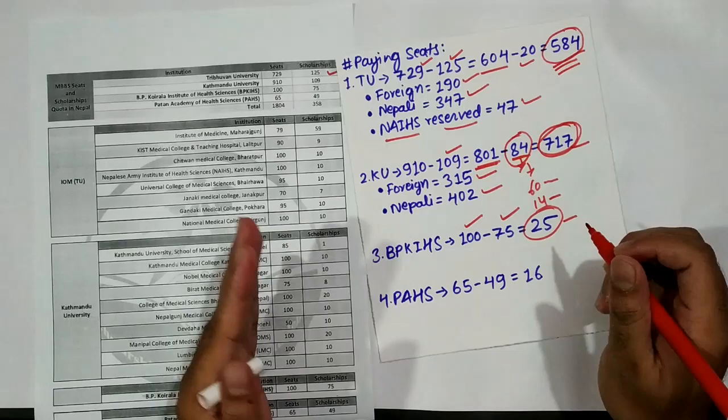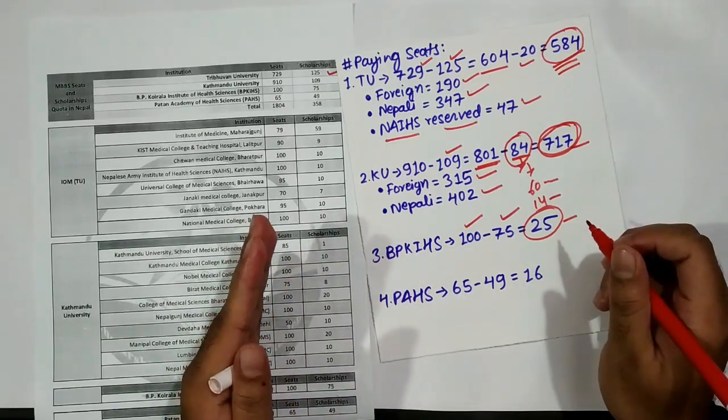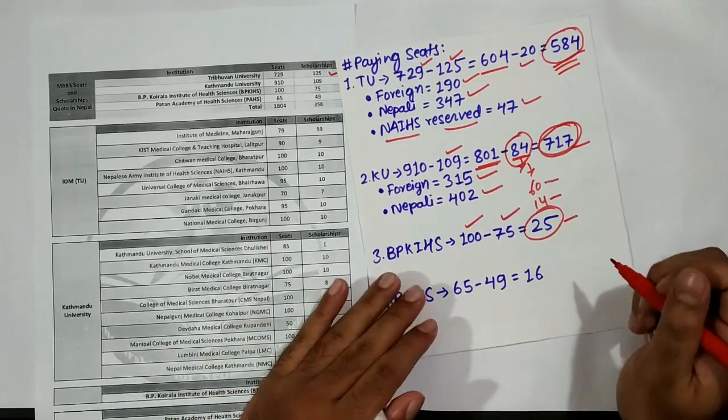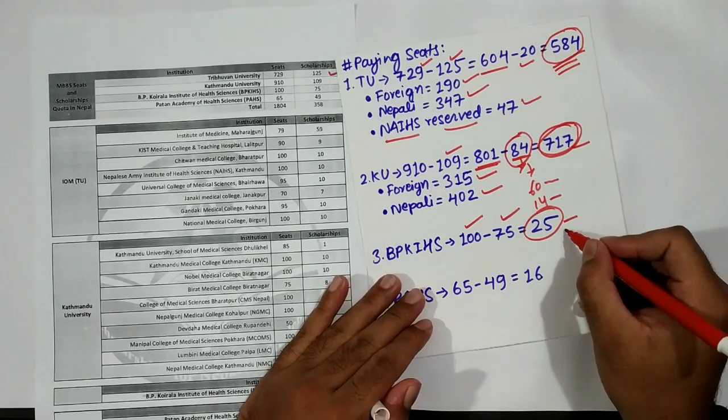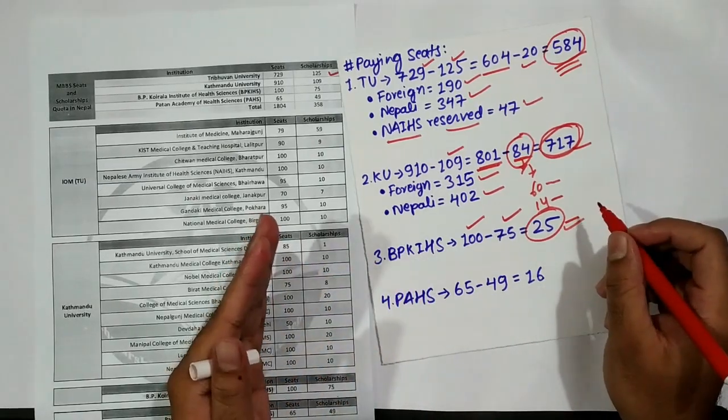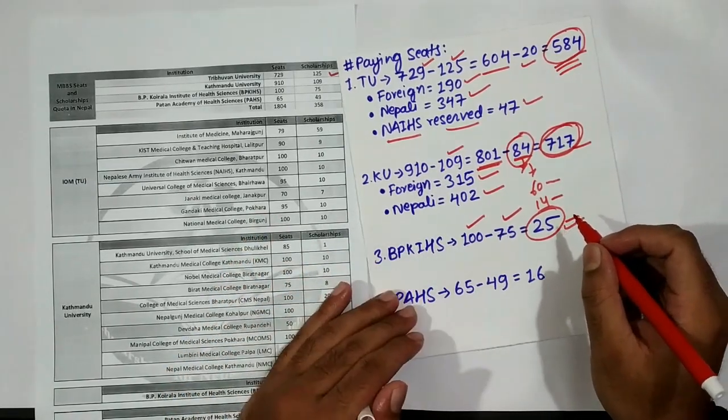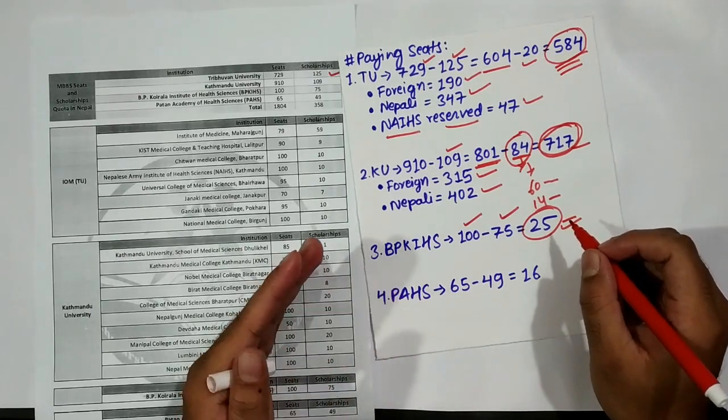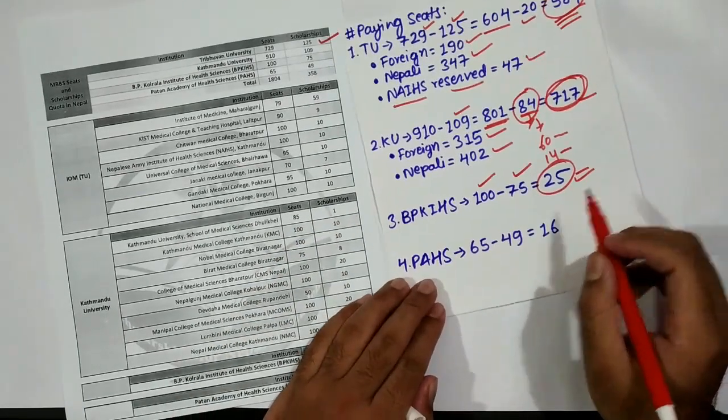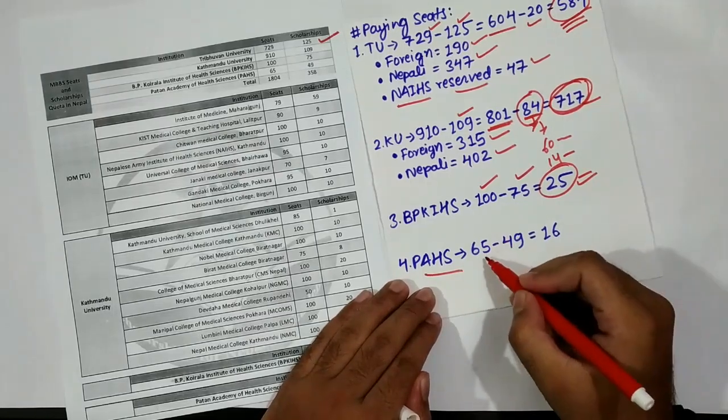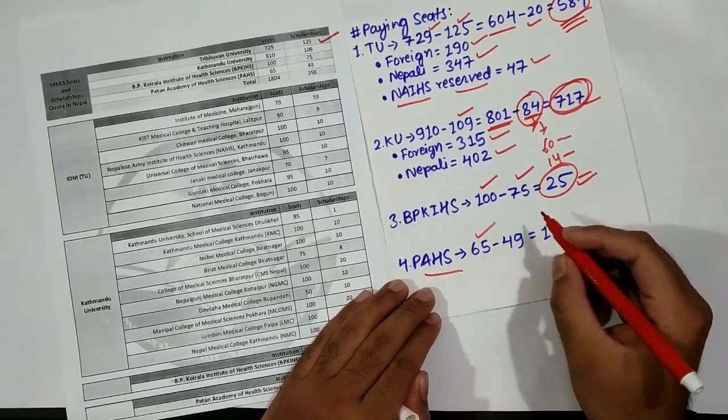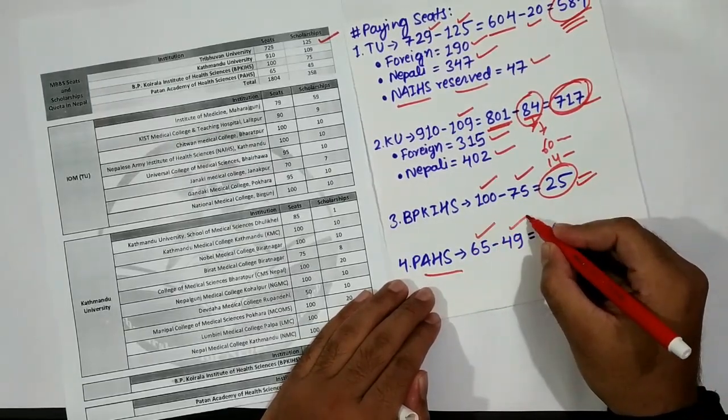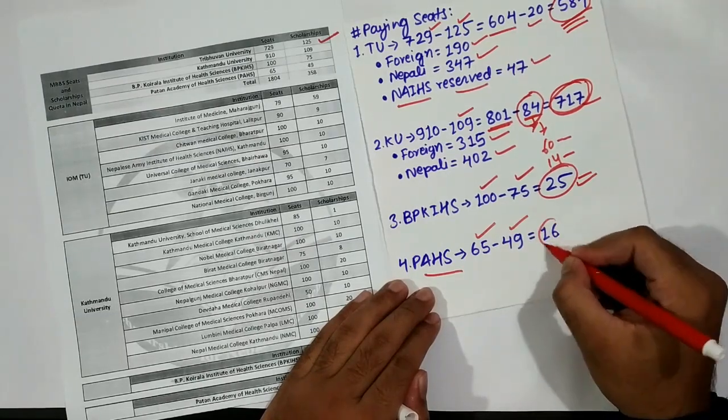It will be BPKHS's decision whether they will completely eradicate the paying scheme for Nepalese students and give the complete 25 seats to the foreign category. We cannot say anything on that until BPKHS publishes its next notice. For Patan Academy, we have 65 total seats, of which 49 are for scholarship and 16 seats for the paying category.